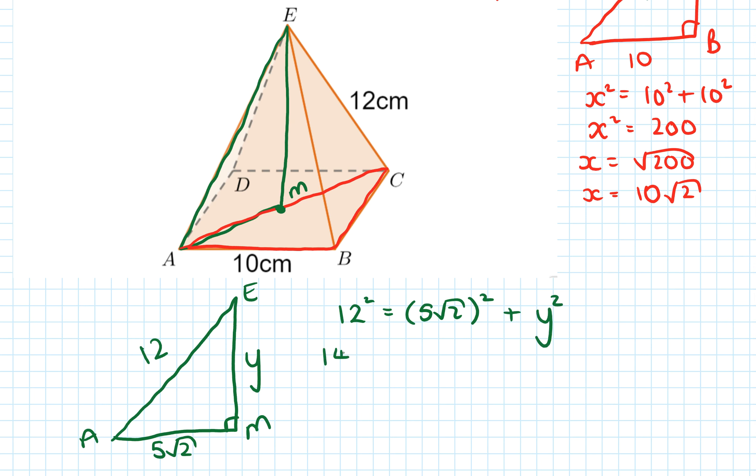y² equals 94, y equals √94 centimeters. I asked you to leave it as a surd or leave it with that square root sign in - that's it, done.